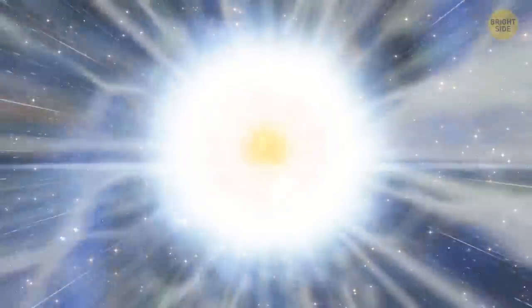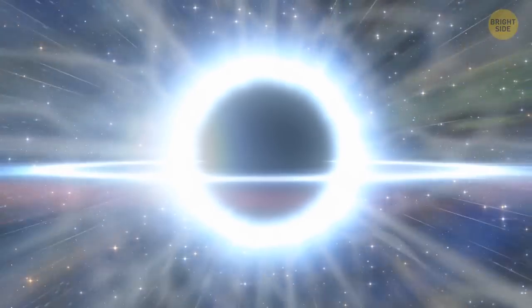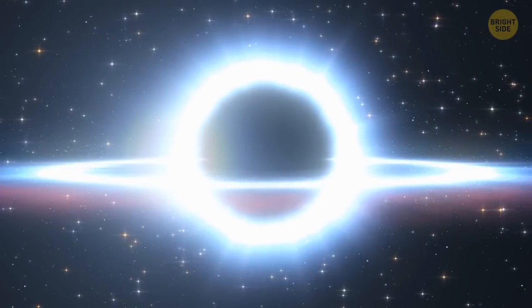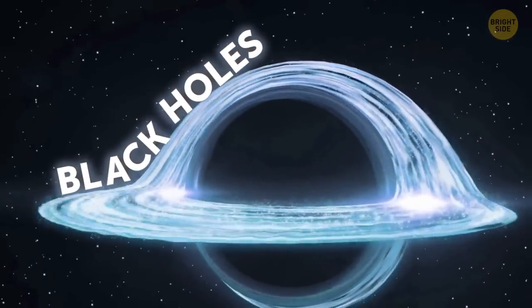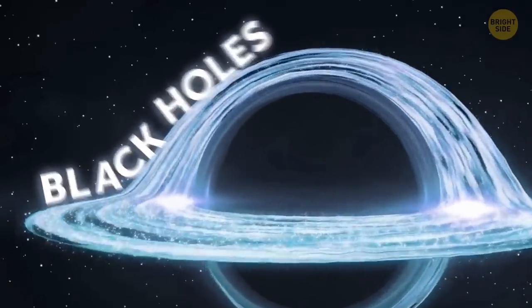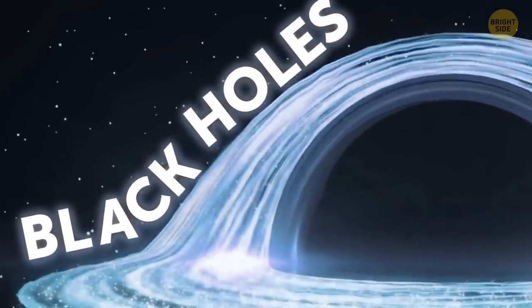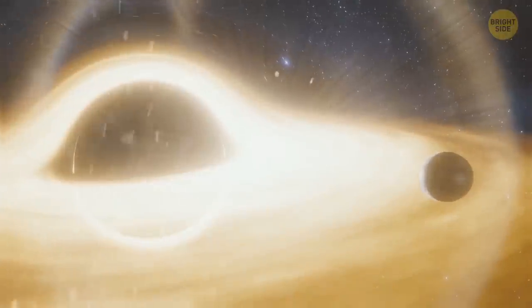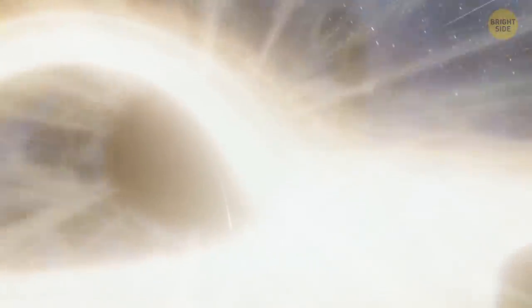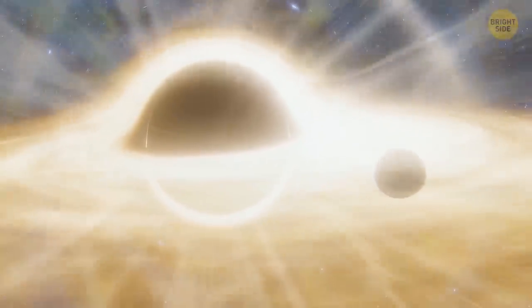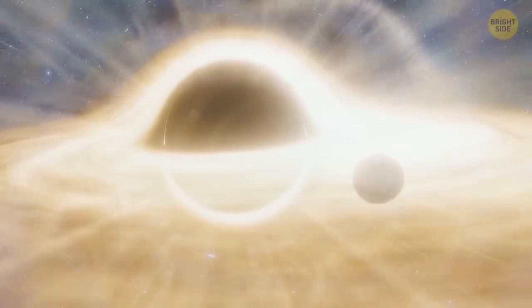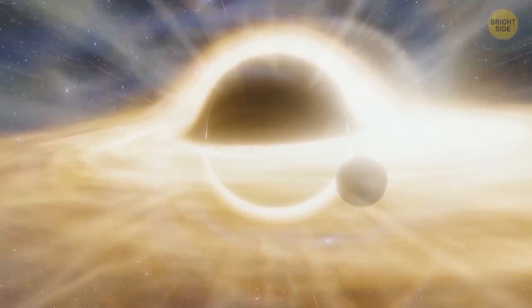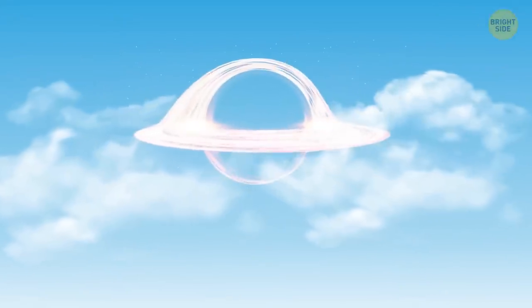Gravity might compress the massive core of the star with such force that a black hole will appear in its place. Black holes are the heaviest objects in the universe. They have incredible gravitational force. Even light can't escape their gravitational trap. The Betelgeuse black hole will begin feeding on cosmic dust and whatever is left of the star. All this debris and light from other stars will get frozen near the event horizon of the growing black hole.